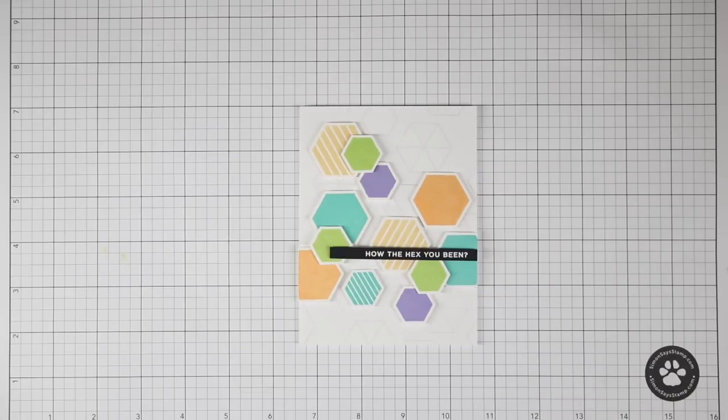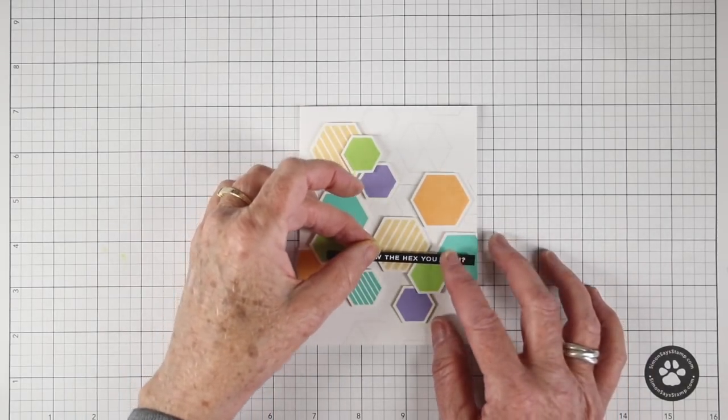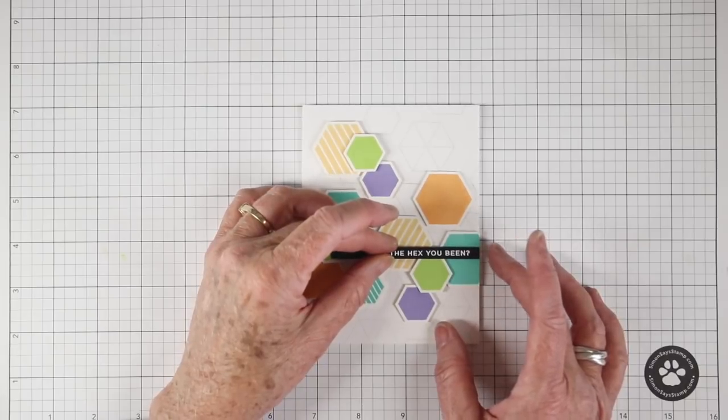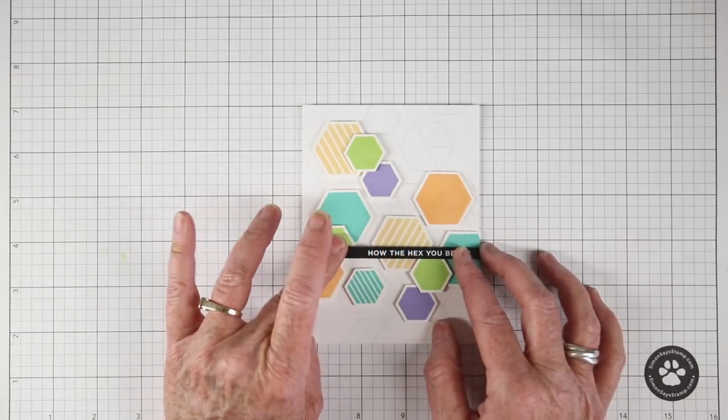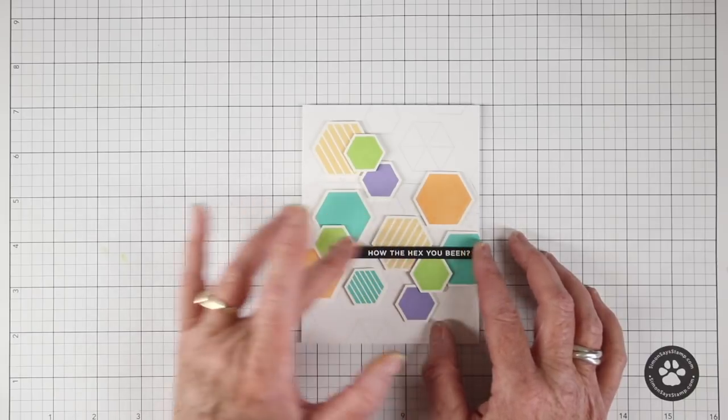Now that I have my background done, I have stamped my greeting onto some black cardstock and I white embossed that. I've added a little bit of foam tape to the back so it sits flush with some of those hexes.